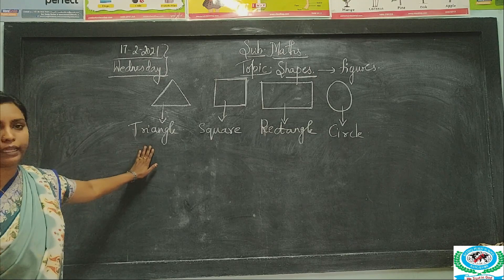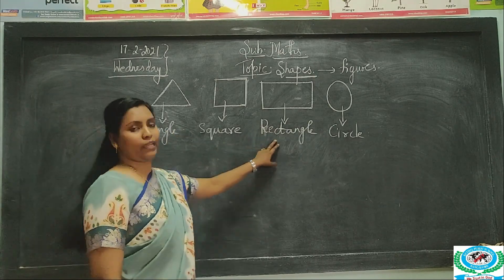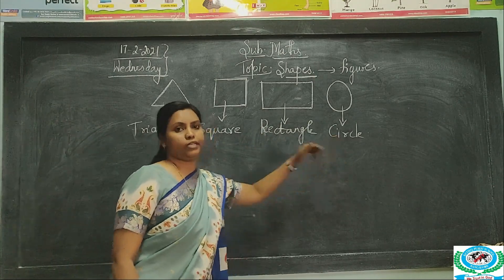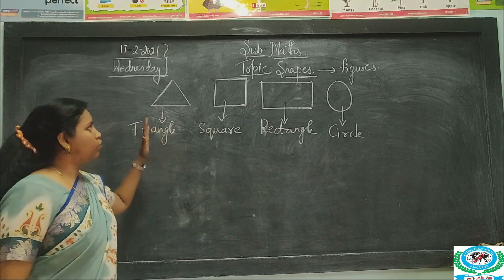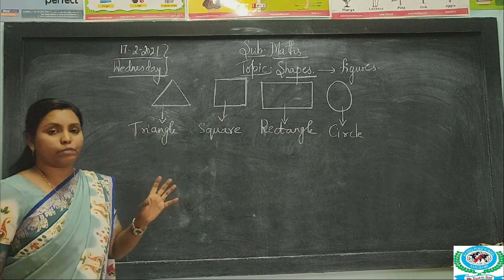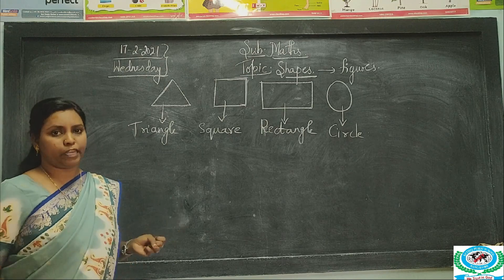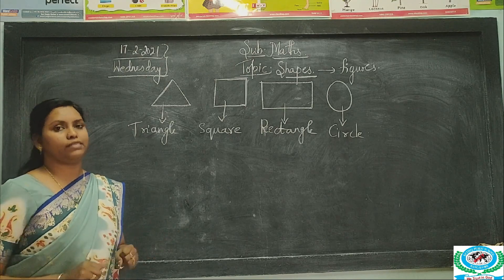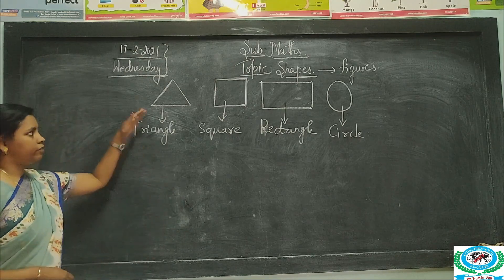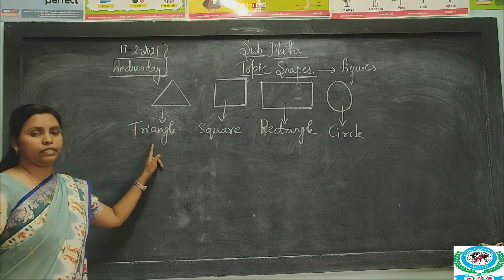So these are the basic shapes in maths: triangle, square, rectangle, and circle. Now we will see what is present in a triangle — how it is made up of, what it comprises of. If you take this figure, it is a triangle.